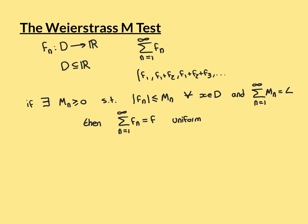The Weierstrass M-Test says that if there exist these M-values — and this is the reason the test is called the M-Test — these M-values are all non-negative real numbers. You need one for each function that is a term in your series: M1 corresponds to f1, M2 corresponds to f2, M3 corresponds to f3, and so on.